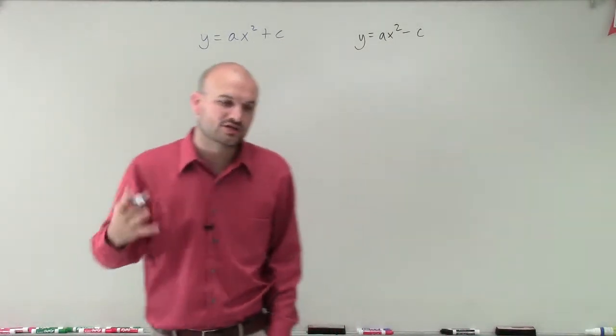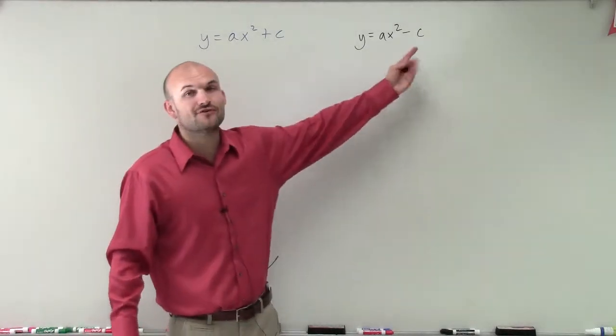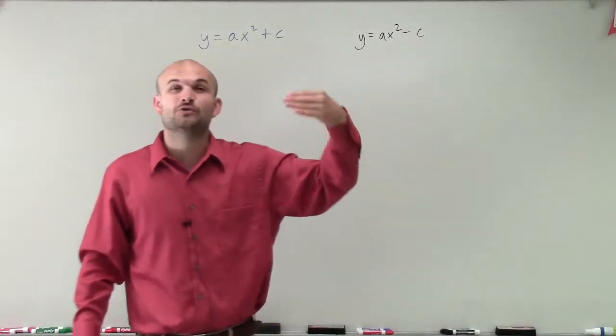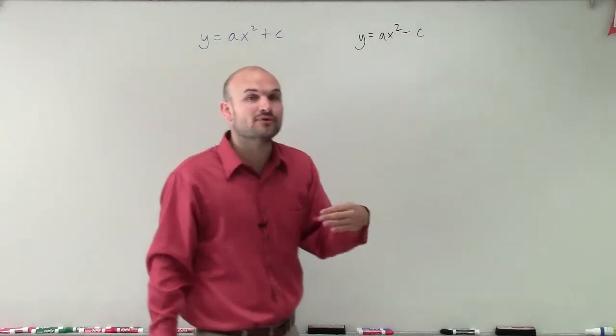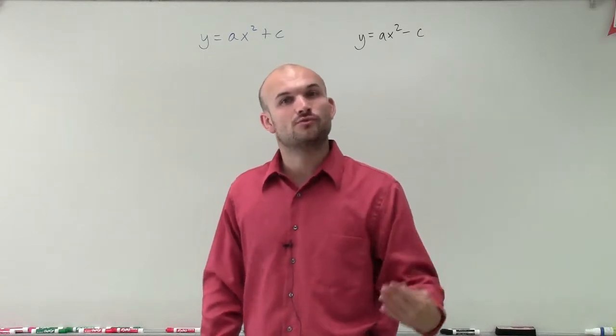But the important thing we need to understand is we do not want to solve for x squared. We need to still solve for the value of x, not x squared. So we need to undo the squaring. And the inverse operation of squaring is going to be the square root.